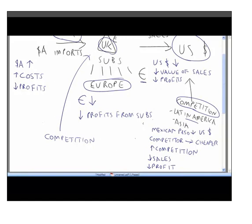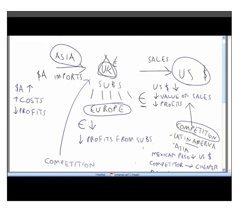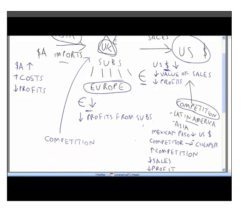For every downside there is also an upside. If Asian currencies depreciate, imports become cheaper. If the US dollar rises, export revenues translate to more sterling. If the euro strengthens, subsidiary earnings are worth more. If the Mexican peso rises, their competitor becomes more expensive. Currency movements can benefit as well as harm — but from a risk management perspective, we focus more on the downside.